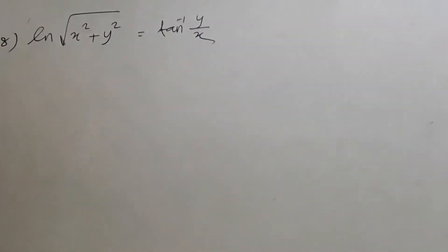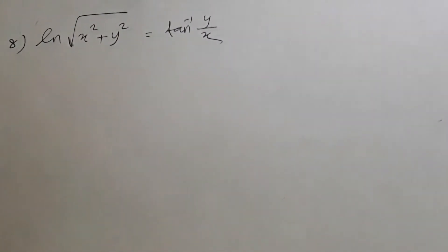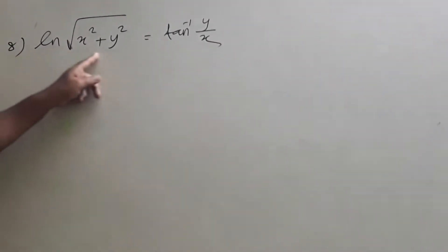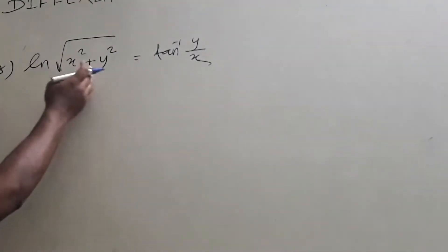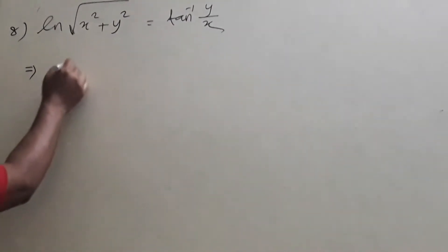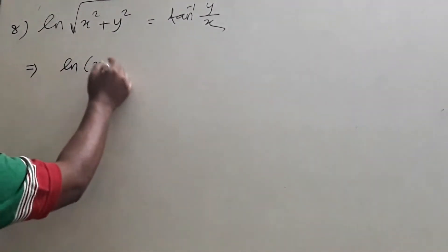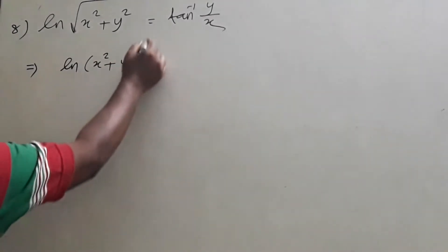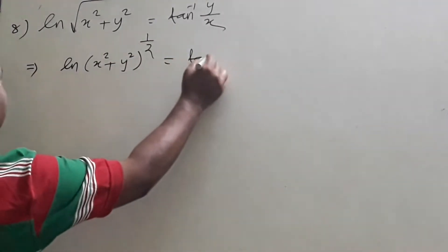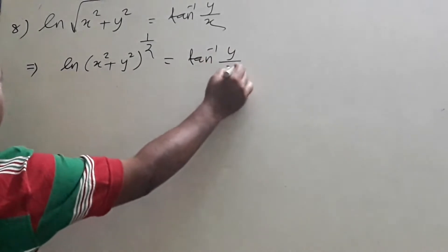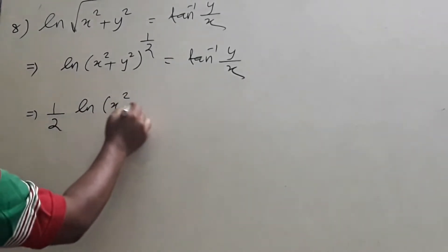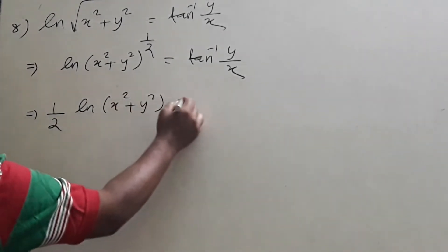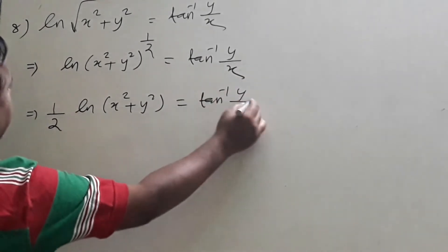We have to differentiate ln√(x² + y²) = tan⁻¹(y/x). If we differentiate this, don't do it directly. First, there is a property of ln. This is x² + y² whole to the power half. Then it is tan⁻¹(y/x). First, keep the half outside: (1/2) ln(x² + y²) = tan⁻¹(y/x).